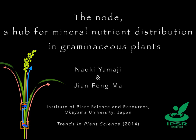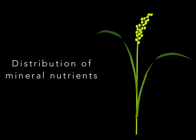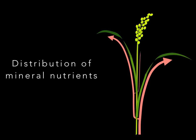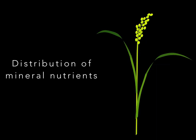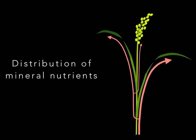Plants require 14 mineral nutrients for their growth. These nutrients, present in soil, are taken up by the roots and then delivered to different organs in the shoots. The translocation of mineral nutrients from the roots to the shoots is mainly driven by transpiration. However, the distribution does not follow the transpiration rate, but follows the demand of each tissue.